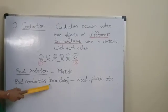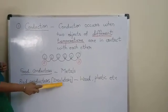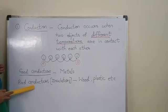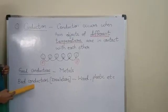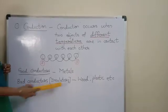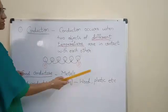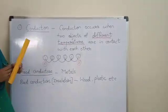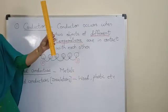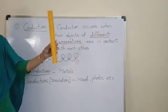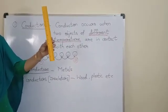Bad conductors or insulators. These substances do not allow heat to pass through them. Example, wood, plastic. Now students, I am having a wooden scale in my hand. This is a bad conductor or an insulator.